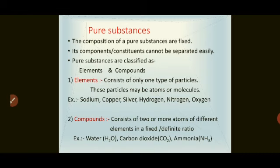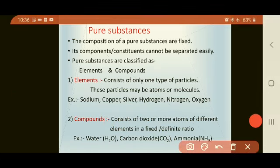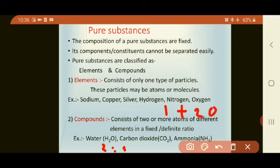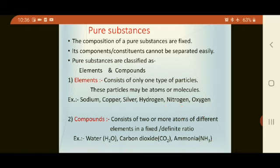Compounds are the combination of two or more elements combined in a fixed or definite ratio — the proportion does not change. For example, water: two hydrogen atoms combine with one oxygen atom, so the ratio of hydrogen to oxygen is 2:1. In carbon dioxide, one carbon combines with two oxygens, giving a ratio of 1:2. So in compounds, the elements combine in a fixed or definite ratio.